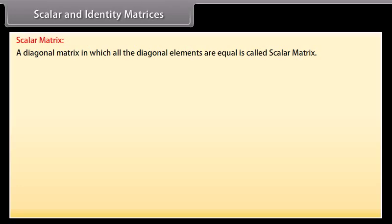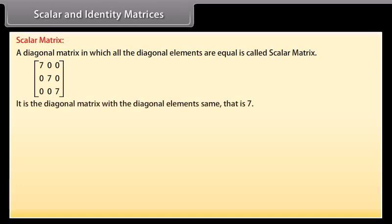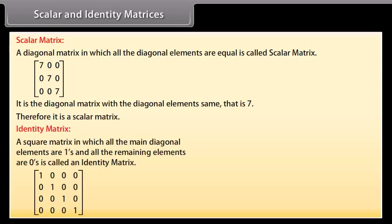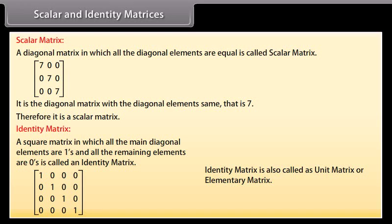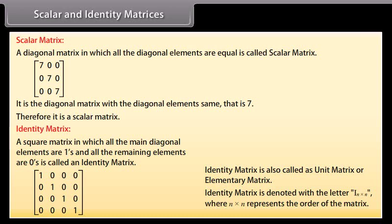Scalar matrix: a diagonal matrix in which all the diagonal elements are equal is called a scalar matrix. Look at this matrix — it is a diagonal matrix with all diagonal elements equal to 7, so it is a scalar matrix. Identity matrix: a square matrix in which all the main diagonal elements are ones and all remaining elements are zeros is called an identity matrix. It is also called a unit matrix or elementary matrix, and is denoted by Iₙ, where n by n represents the order of the matrix.